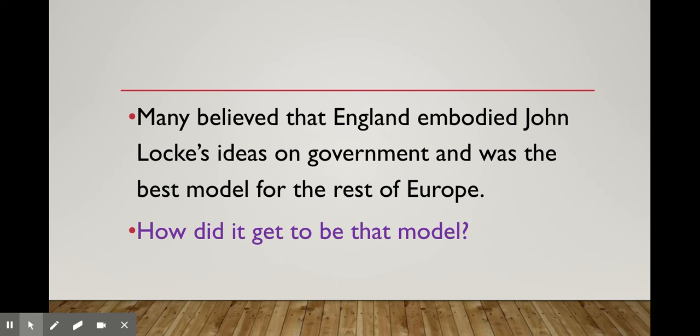Many at this time, as we move into the age of the Enlightenment, believed that England embodied John Locke's ideas through their government — when they transitioned from an absolute to a constitutional monarchy. England's constitutional monarchy becomes the best model that Europe sees. So when we look at what's happening in other countries during the Enlightenment, they're wanting their government to change over like England's did. But exactly how did England get to be that model?